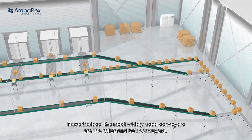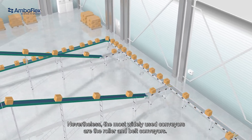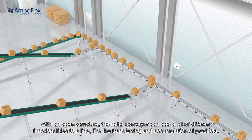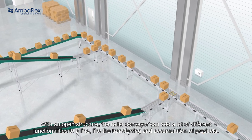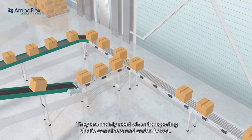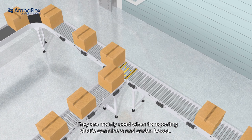Nevertheless, the most widely used conveyors are the roller and belt conveyors. With an open structure, the roller conveyor can add a lot of different functionalities to align, like the transferring and accumulation of products. They are mainly used when transporting plastic containers and carton boxes.